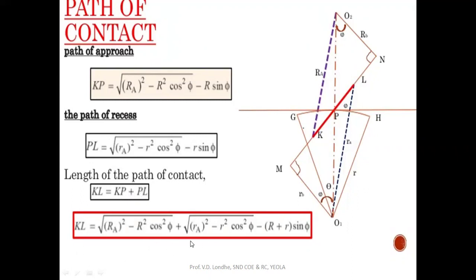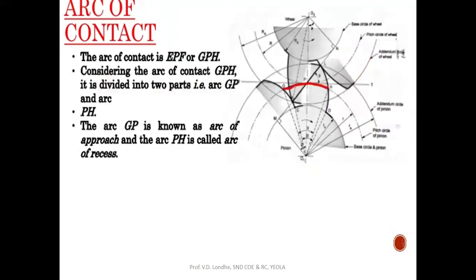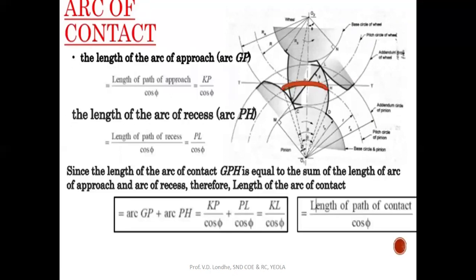Now, what is the arc of contact? Points G, P, and H are defined such that at point G the gear comes closer and at point H they move away from each other. The total length of the arc of contact is GPH, where GP is the arc of approach and PH is the arc of recess. The total arc of contact equals the total path of contact divided by the cosine of the pressure angle.